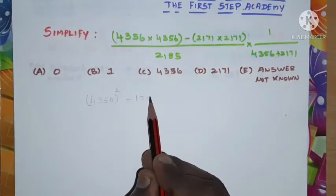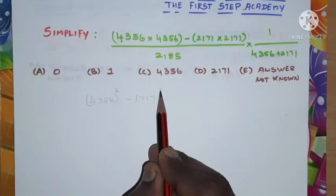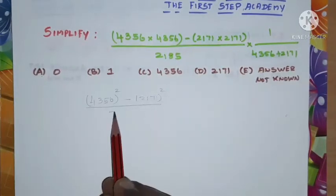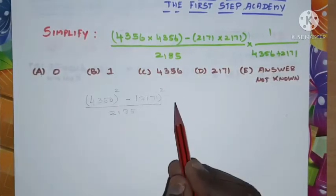Divided by the denominator value, I'm writing 2185 into 1 divided by 4356 plus 2171. Let it be.